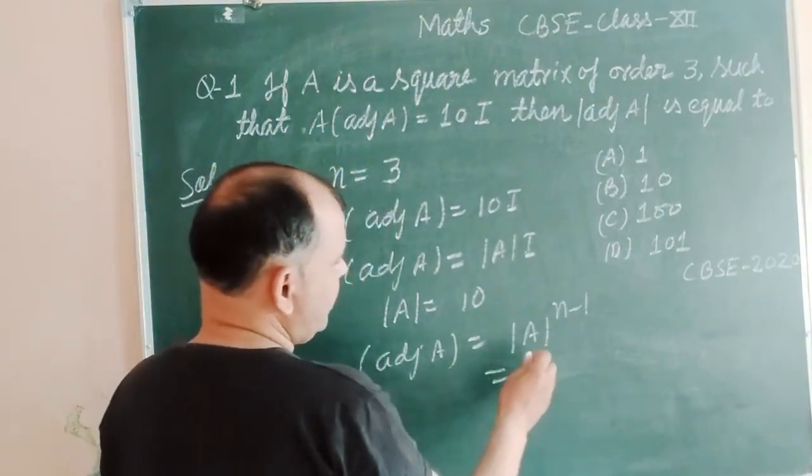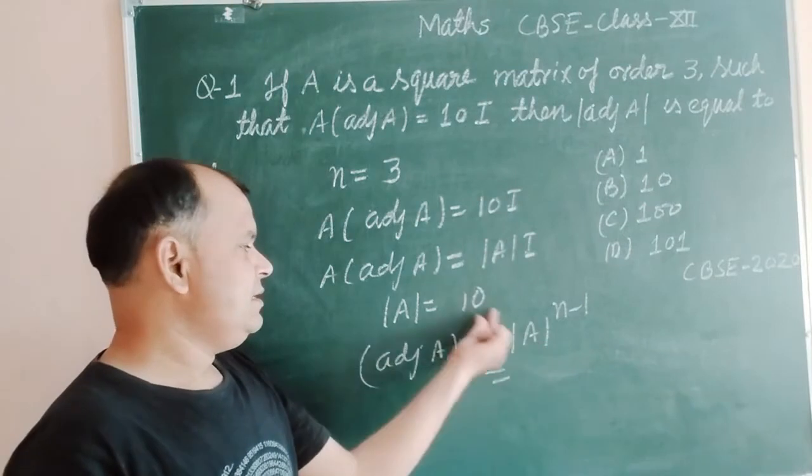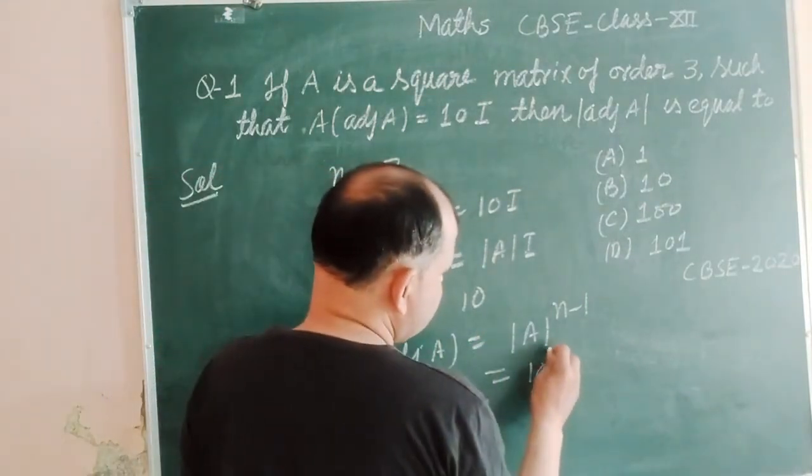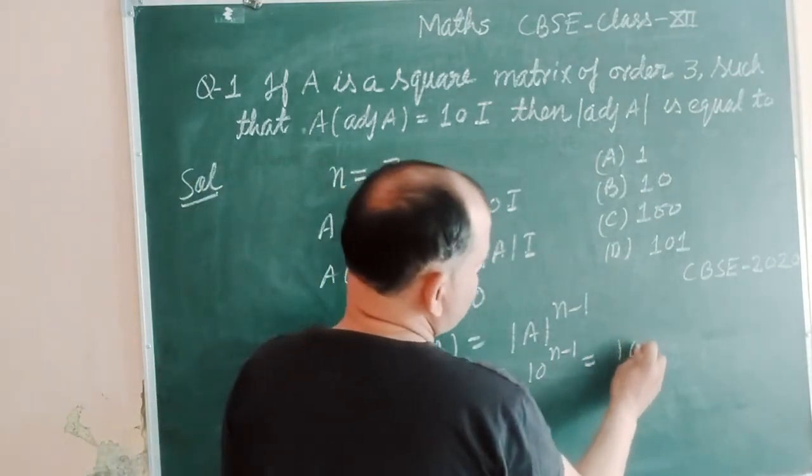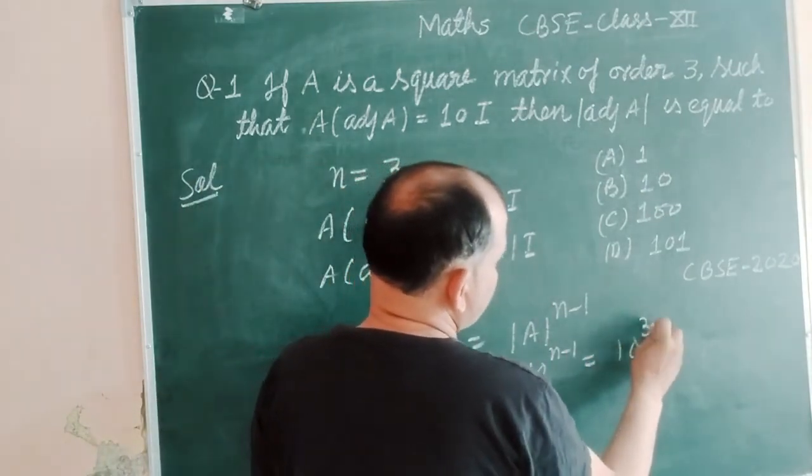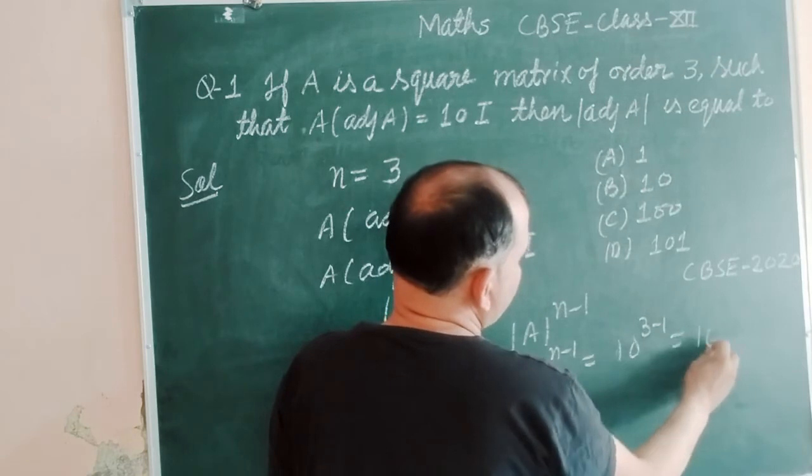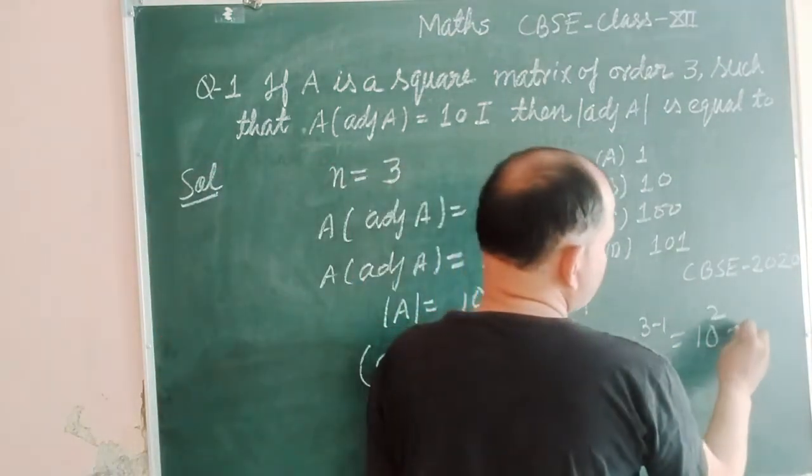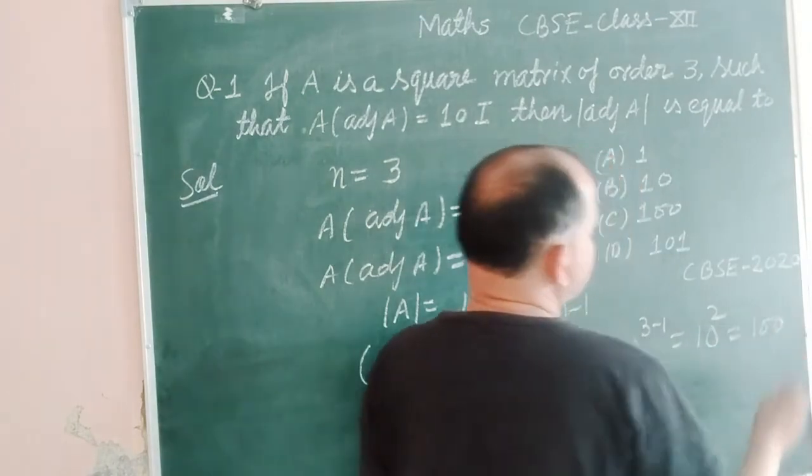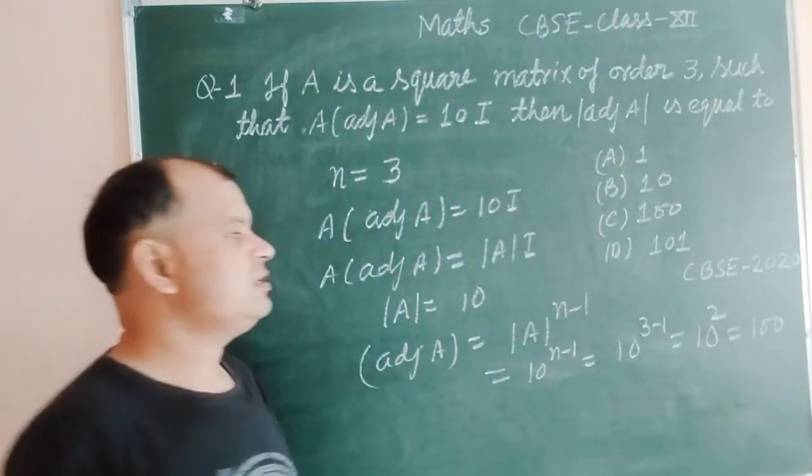So here, |A| is given to us as 10, so 10^(n-1) and n is 3. So we got 10^(3-1), which is 2. So this is equal to 100.